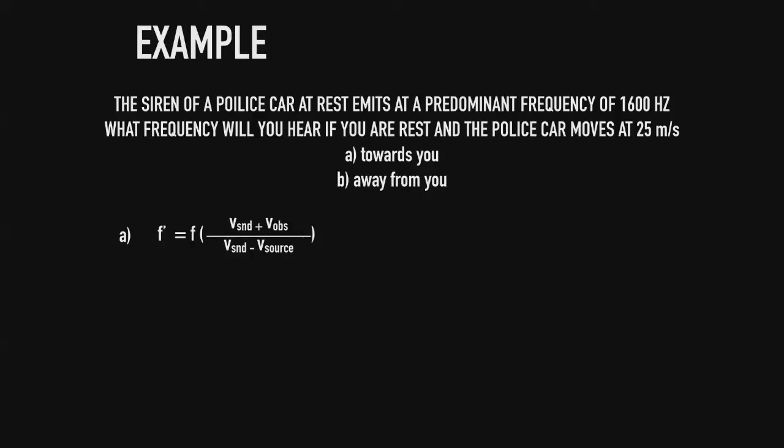Using our approaching formula, the perceived frequency equals the source frequency times the velocity of sound in air plus the velocity of the observer, over the velocity of sound in air minus the velocity of the source. Since we are at rest, the observer's velocity is zero. Plugging in the values, the perceived frequency of the observer is 1726 Hz.